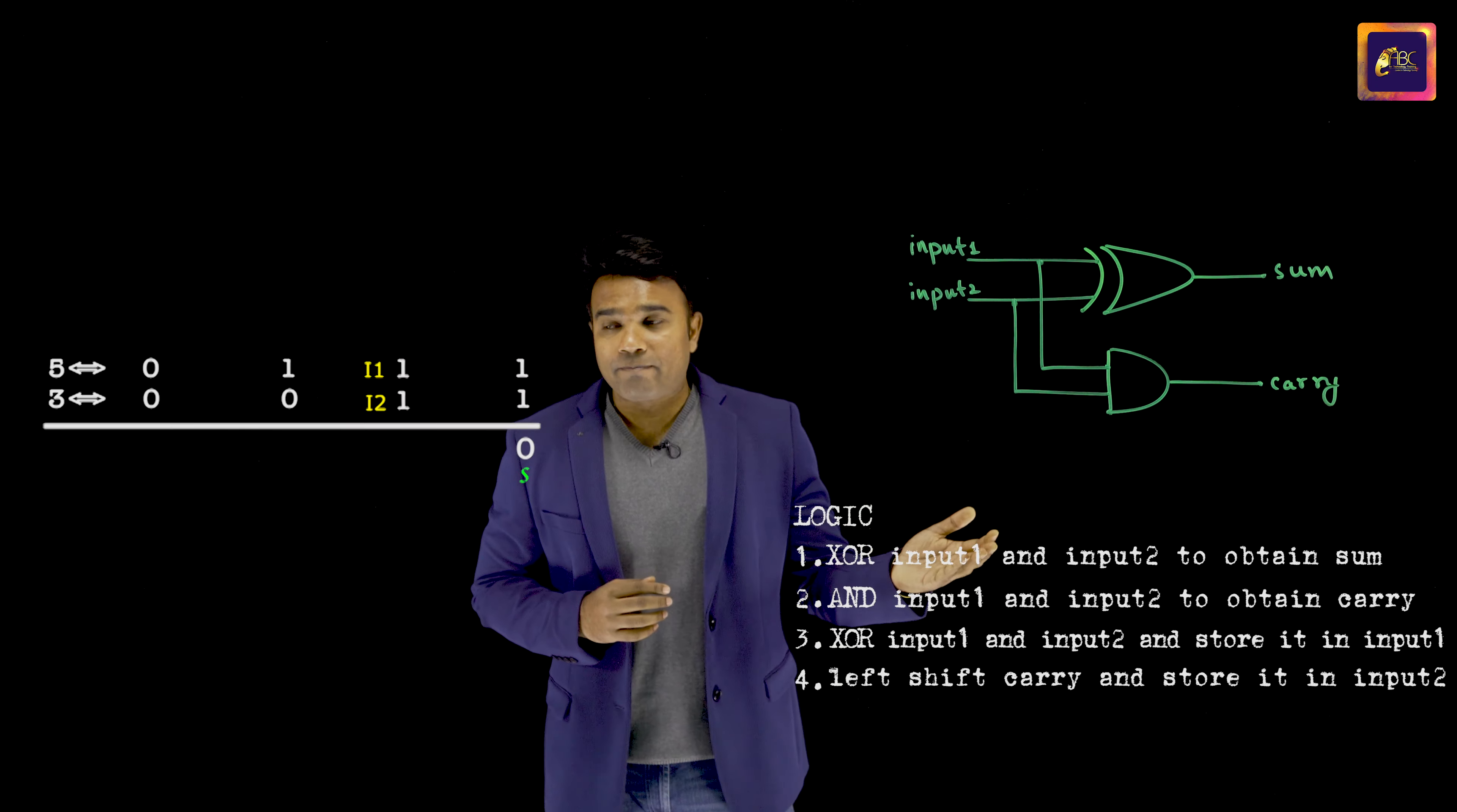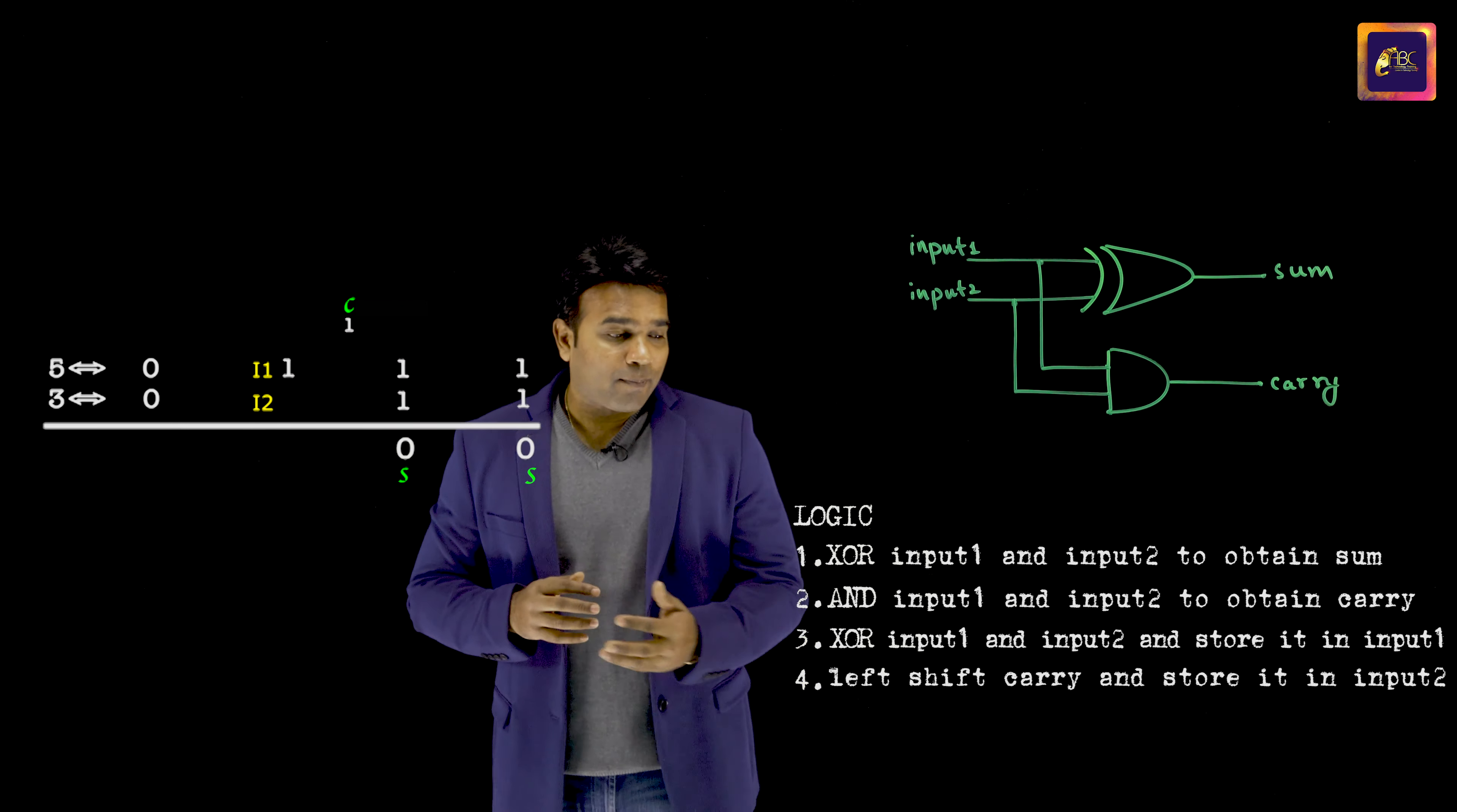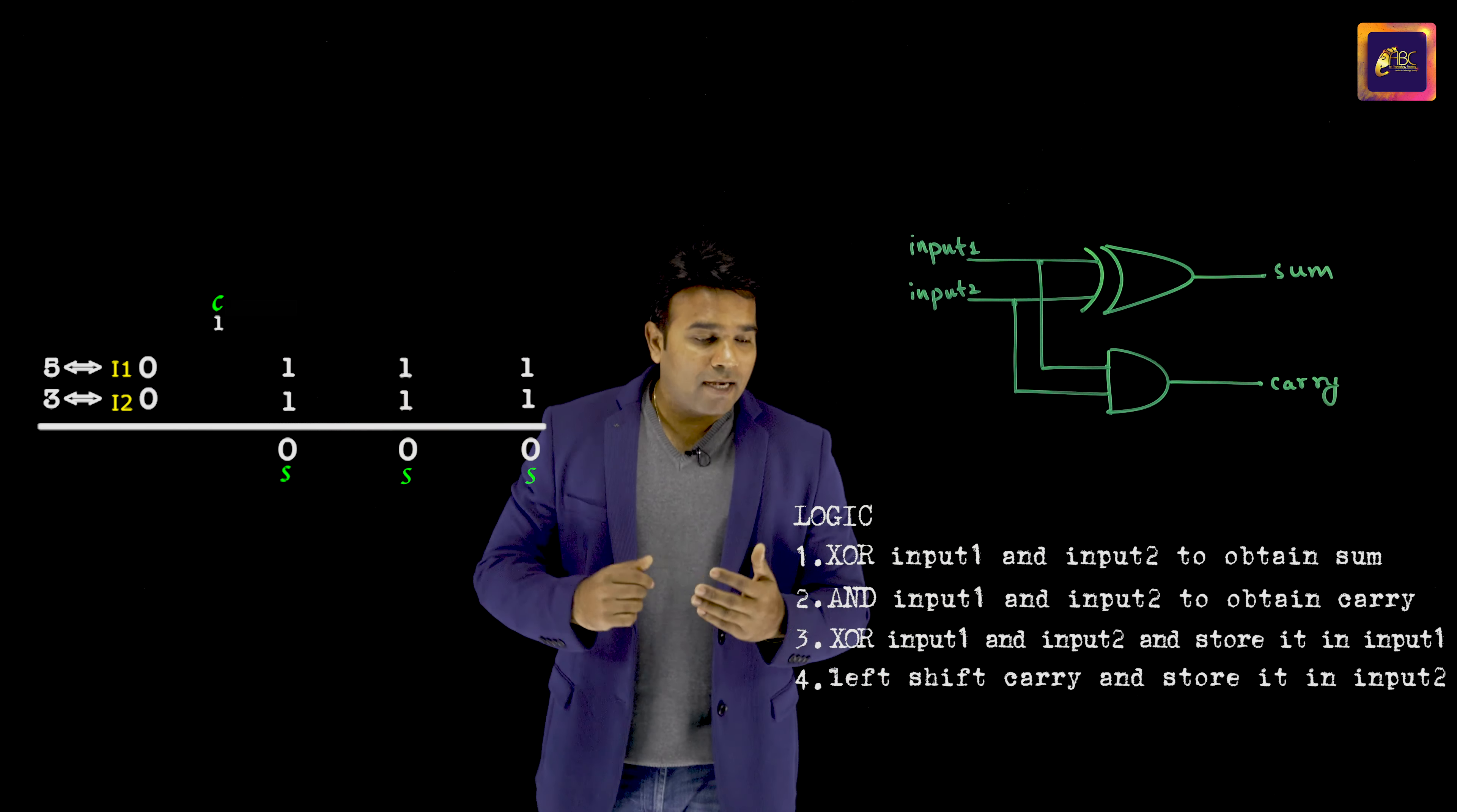So when I will apply the first step, I get the sum. When I will apply the second step, I get the carry. When I will apply the third step, I am temporarily adding the 1 and 0 and I am getting the result as 1. And when I will apply the fourth step, carry comes in as input 2. What next? Again, I need to repeat these steps. So when I will apply the first step, that is the case, second step, that is the one, third step, and the fourth step.